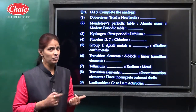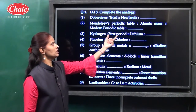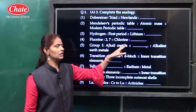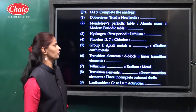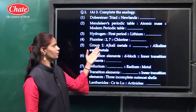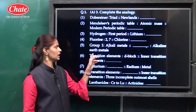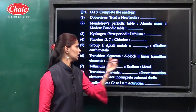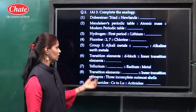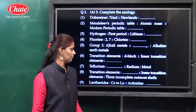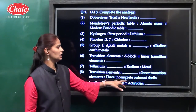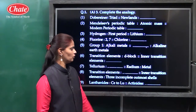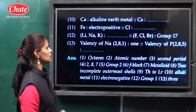Dobereiner gives the triads law, Newlands gives the law of octaves. Mendeleev's periodic table is based on atomic mass; the modern periodic table is based on atomic number, so the answer is atomic number. Hydrogen is in the first period, lithium is in the second period. The electron configuration of fluorine is 2,7 and the atomic number of chlorine is 17, so the electron configuration of chlorine is 2,8,7. Group 1 is called alkali metals and group 2 is called alkaline earth metals, so the answer is group 2.